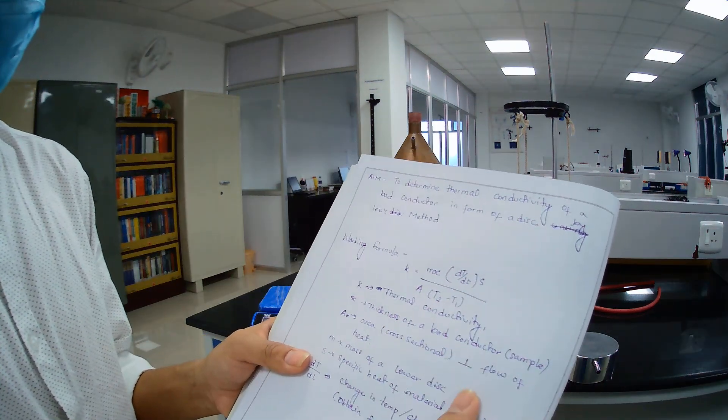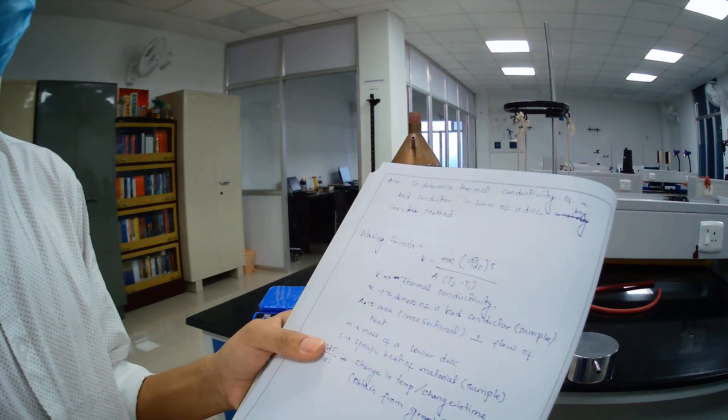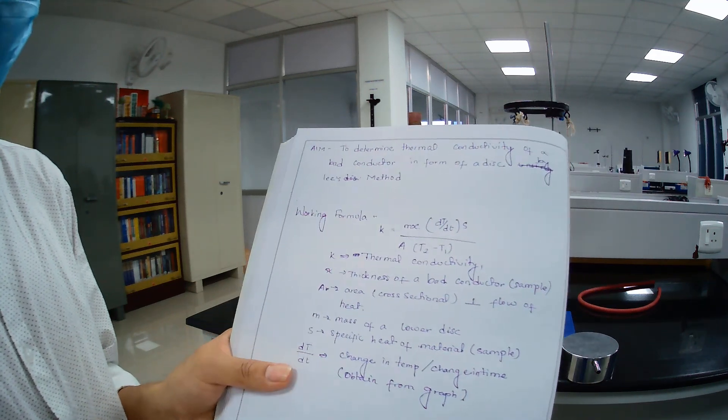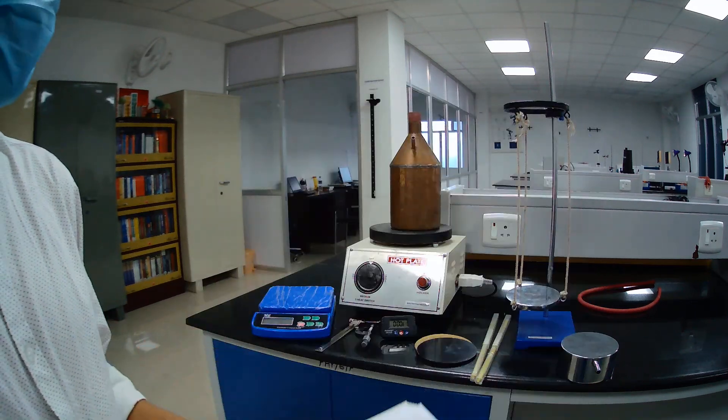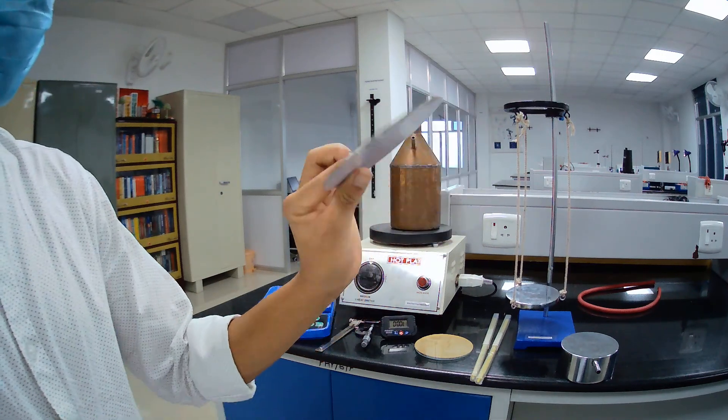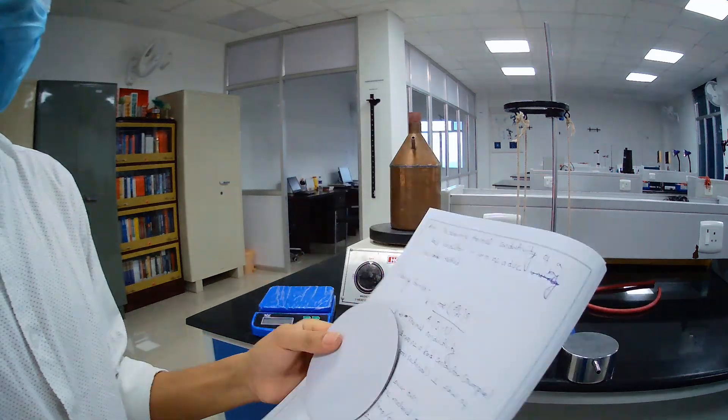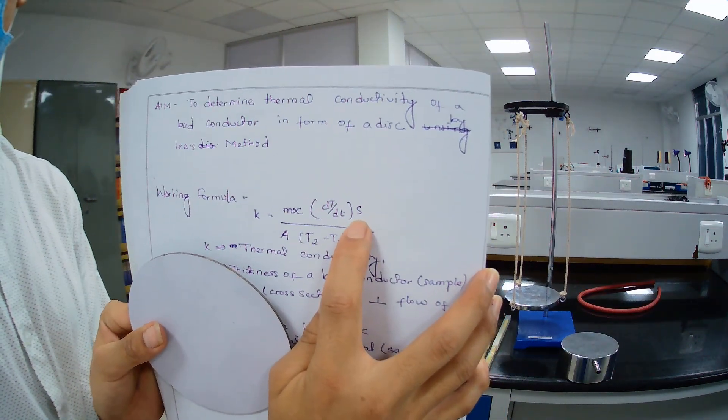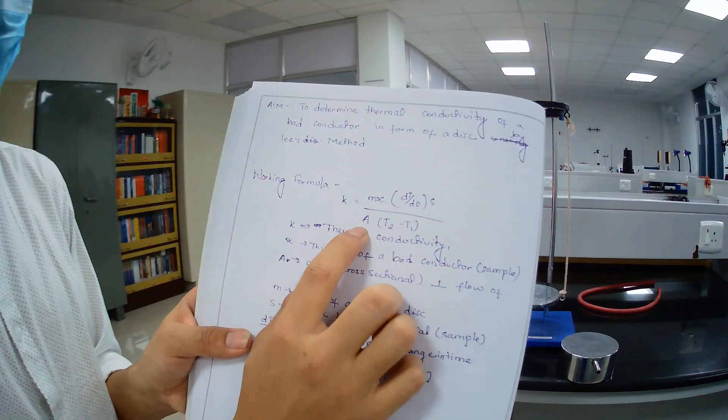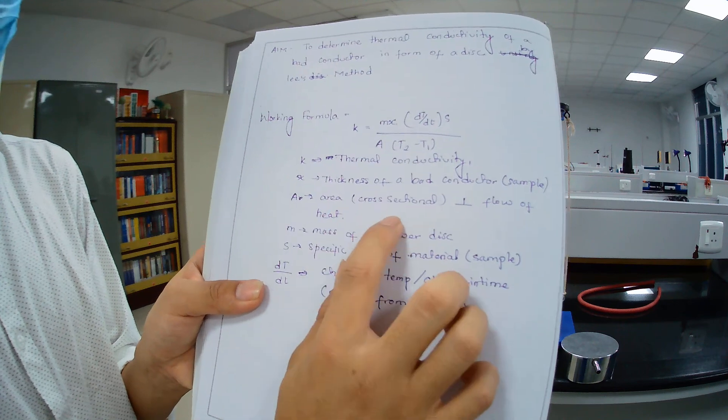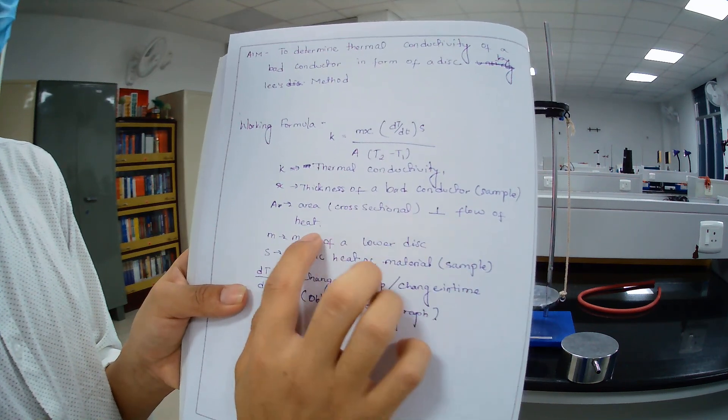dT/dt is change in temperature per unit time which we find through graph. S is specific heat of the sample. Here this is a bad conductor, means sample, and specific heat of this sample is given. T1 and A, this area is cross sectional area of sample perpendicular to the flow of heat.